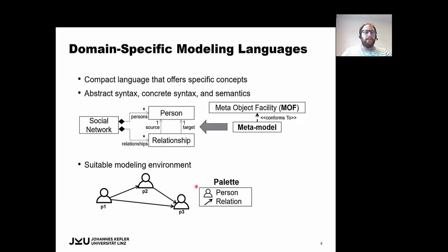Social network contains persons and also the relationship between them. So, to create the models that conform to this metamodel, we can generate a suitable modeling environment, in which we can have a canvas and a palette to create a specific person and the relation between them. So, from now on, my colleague Felix will continue with this presentation.